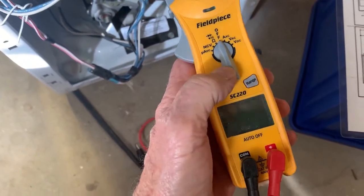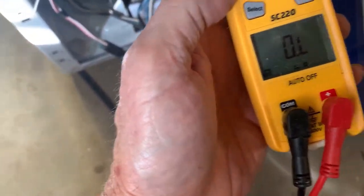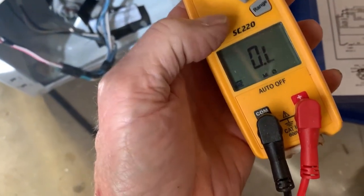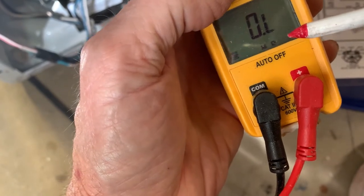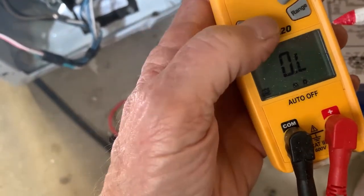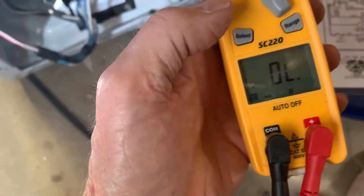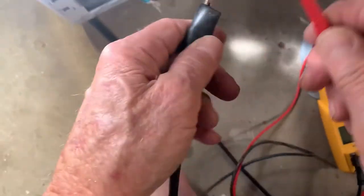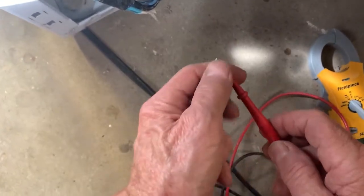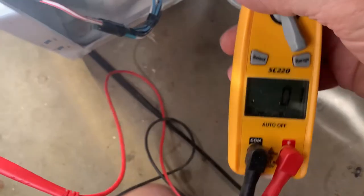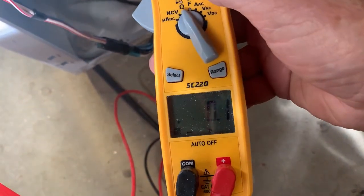We're going to use our ohms setting on the meter. I turned it to ohms and notice it says m ohms. Push the select button and we have ohms. And as a reminder, when we have continuity, you'll hear that sound and the reading on the meter will be somewhere around zero.